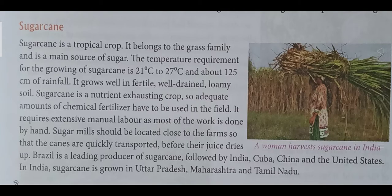Sugarcane requires extensive manual labor as most of the work is done by hand. Sugar mills should be located close to the farm so that the canes are quickly transported before their juice dries. Most importantly, Brazil is the leading producer of sugarcane, followed by India, Cuba, China, and the United States.